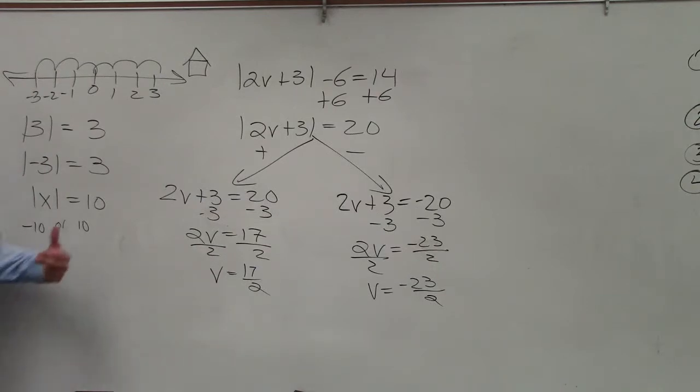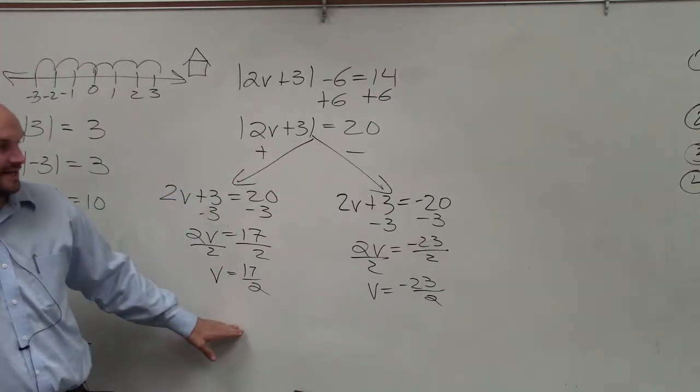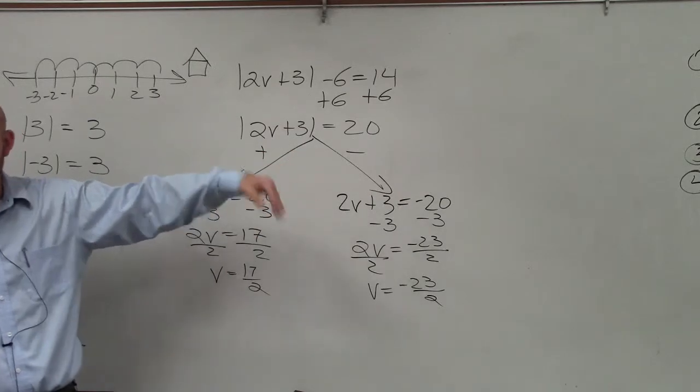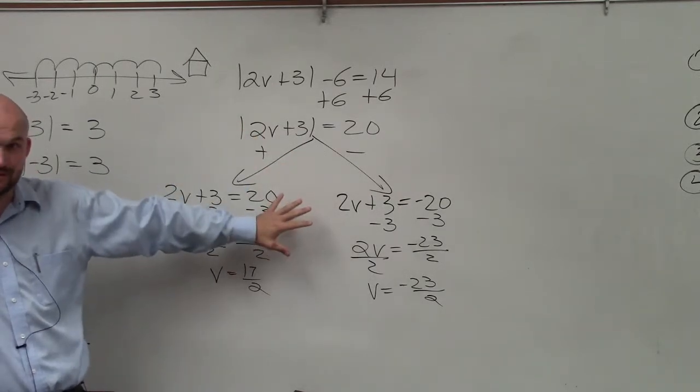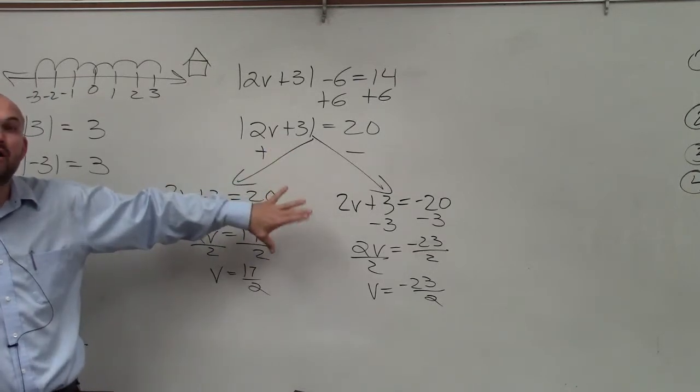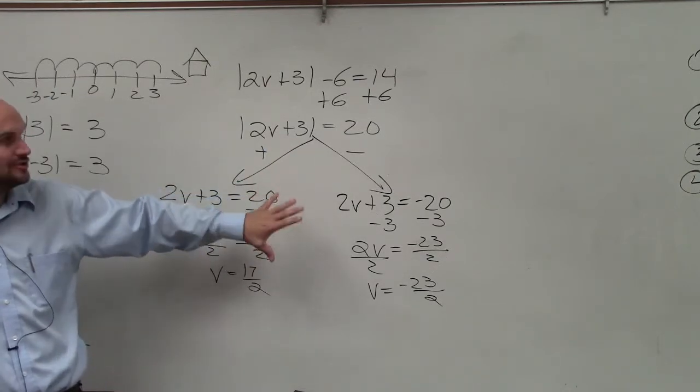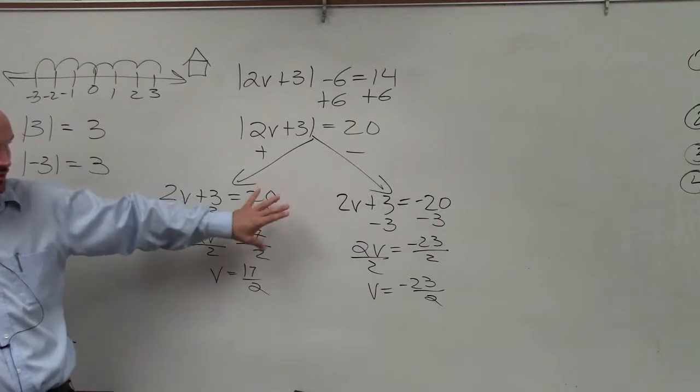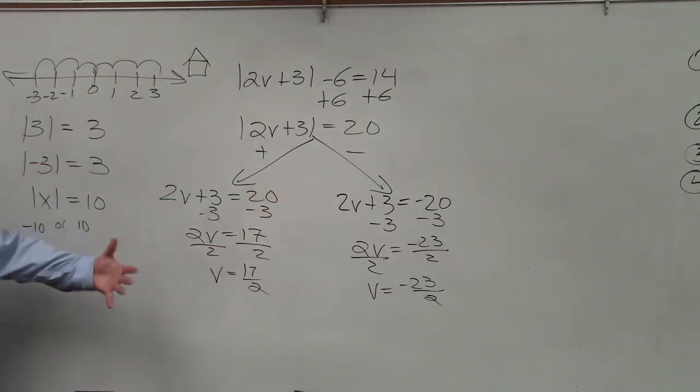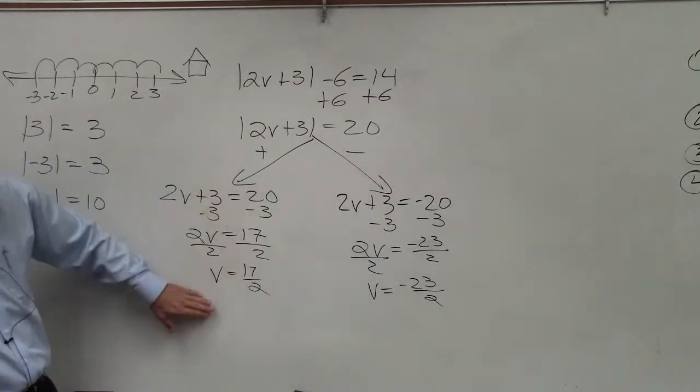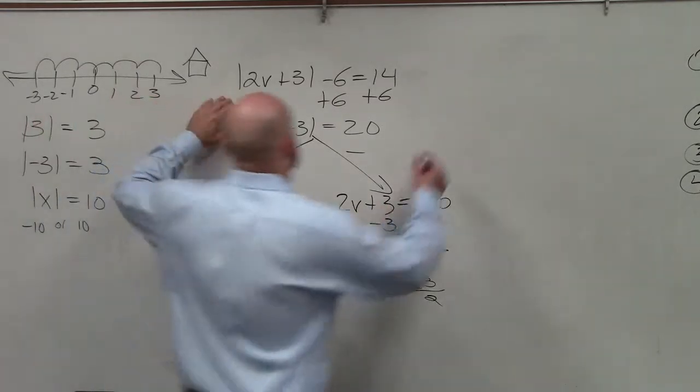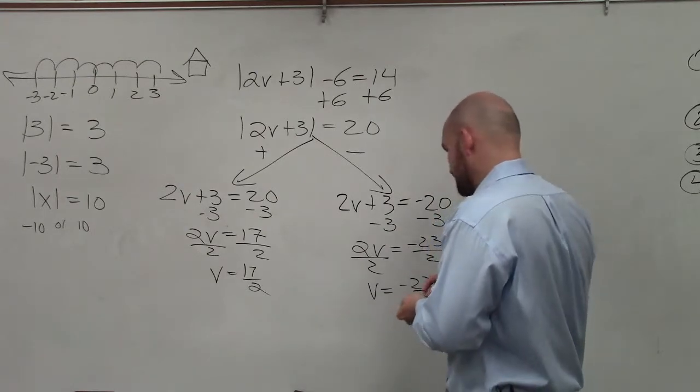So the last step, now that I've solved, I have two answers. The last step is to check your solutions. This is very important for absolute value equations. Because not always are solutions going to be actual solutions to the equation. So to do that, we have to check the solutions. To check the solutions, what you do is take your values and plug them back into your equation. So you go back to your original equation.